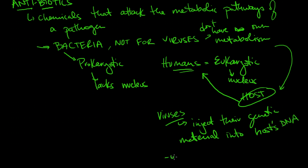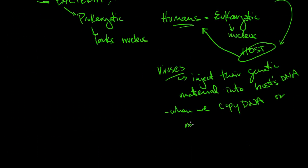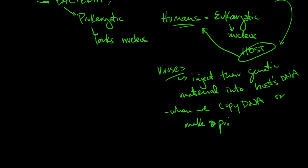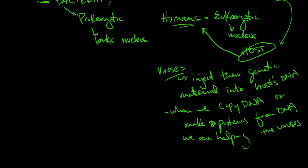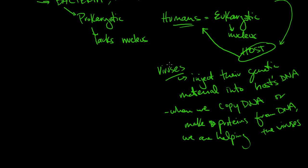When we copy DNA, we are unknowingly copying viral DNA and helping the virus. We would be making hundreds of copies of that virus and viral proteins, and then it would cause the cell to bust open to unleash those viruses onto other cells. That's why antibiotics work for bacteria but not viruses—it has to do with their metabolism.